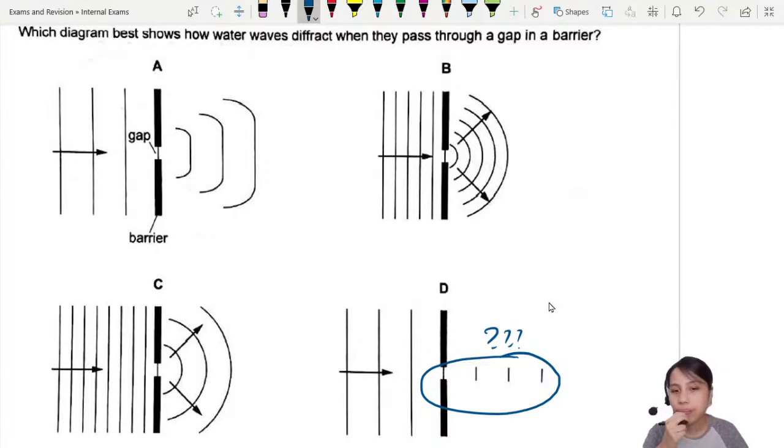Let's look at C first. C looks pretty correct, but there's something strange happening here. You see this wavelength? It's quite short, right? Then how come after going through the gap, the wavelength become longer one?